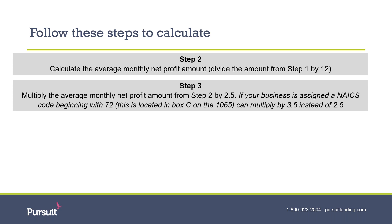Now that we've added together all of our possible payroll costs, we will calculate the average monthly payroll amount by taking the total number from step 1 and dividing it by 12. From there, we will multiply this number by two and a half times — or three and a half times for businesses assigned a NAICS code beginning with 72, which covers food service or accommodation businesses such as restaurants or hotels. This gives you your maximum loan amount for the Paycheck Protection Program.